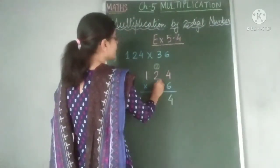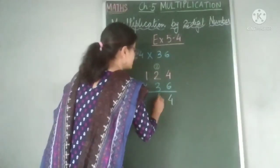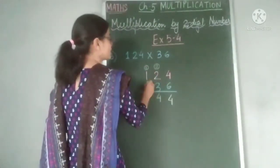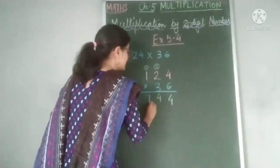Now again, 6 times 2 are 12 plus 2, 14. 4 is written here, again 1 is carried over. Now, 6 times 1 are 6 plus 1 is 7.